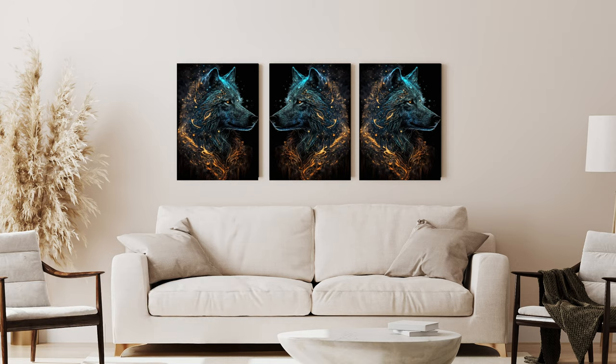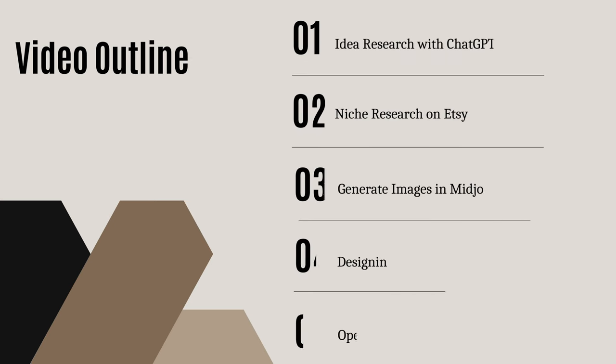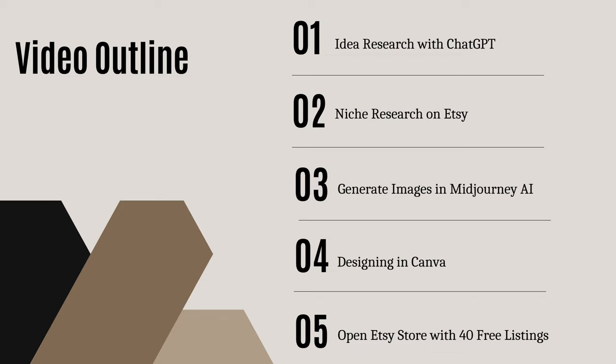We'll be covering five steps. One would be to do idea research using ChatGPT, and then we'll be doing in-depth niche research on the Etsy platform. We'll move over to Midjourney where we'll be generating the art, and use Canva to put the designs together. And finally, I'll be showing you how to open your Etsy store, get 40 free listings, make your listings and start making sales.